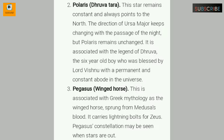Number three: Pegasus — Winged Horse. This is associated with Greek mythology as the winged horse that sprang from Medusa's blood. It carries lightning bolts for Zeus. The Pegasus constellation may be seen when the stars are visible in the night sky.